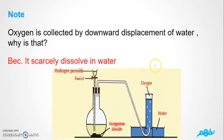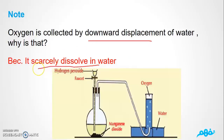We noted that oxygen is collected by downward displacement of water. This is because oxygen cannot dissolve in water — oxygen gas scarcely dissolves in water. Unlike carbon dioxide, oxygen is collected by downward displacement of water because it does not dissolve in it.